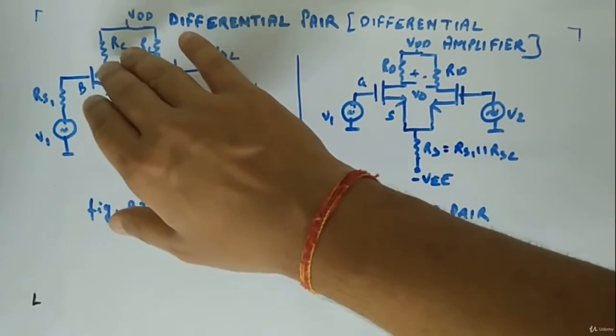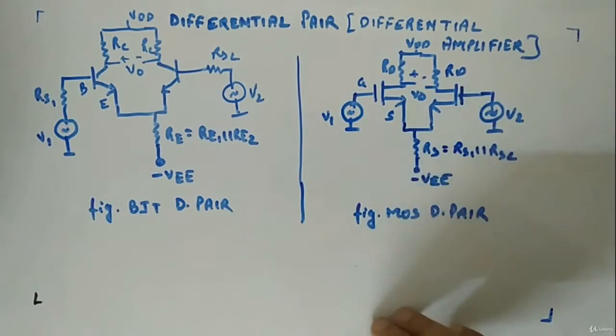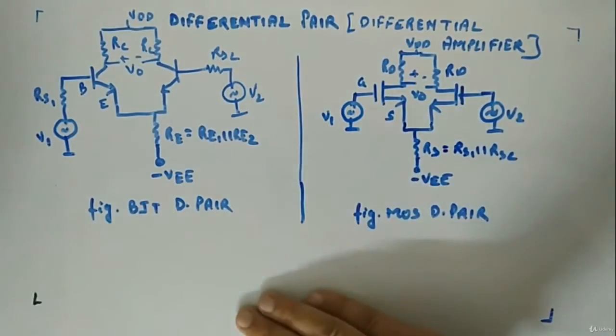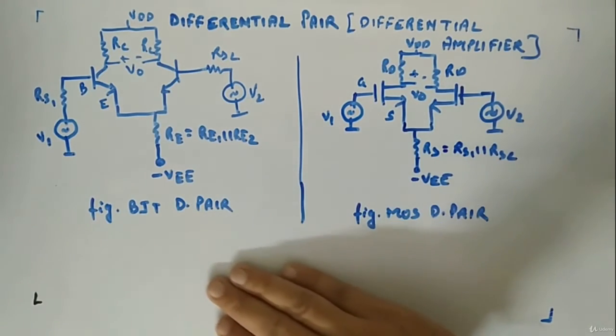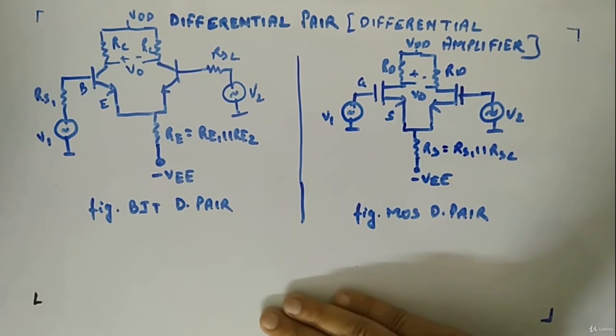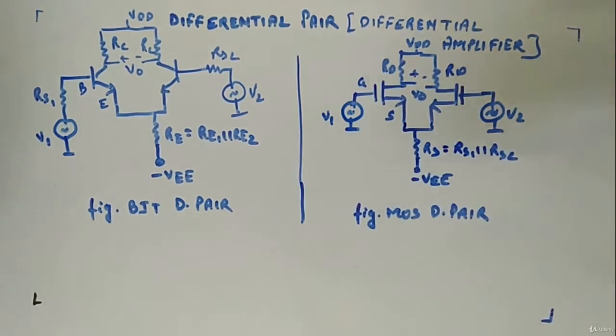Just like instead of RC you will have RD, these kind of changes you will have. We'll extensively solve this circuit, so let's start.